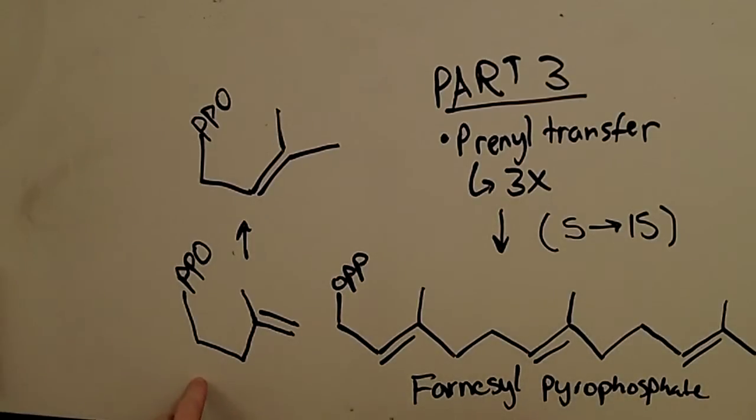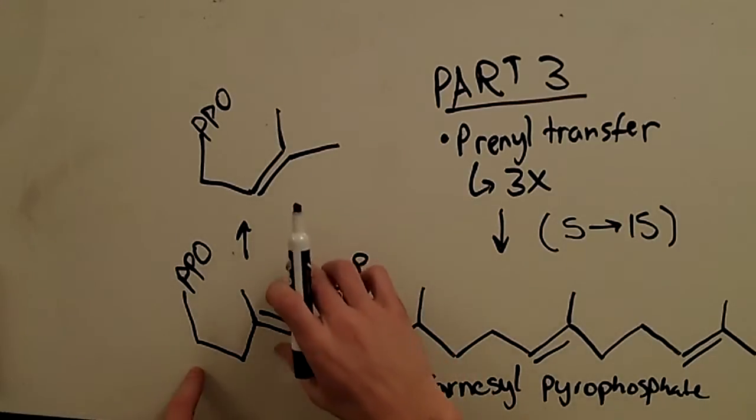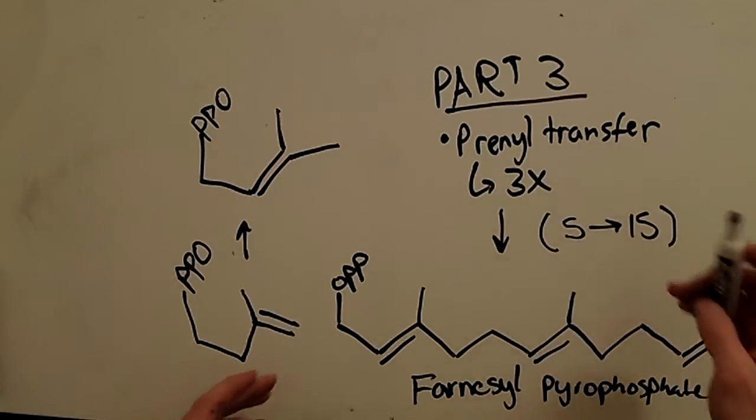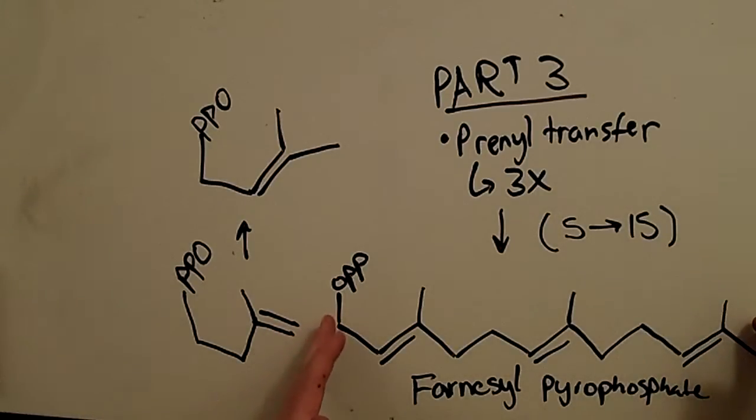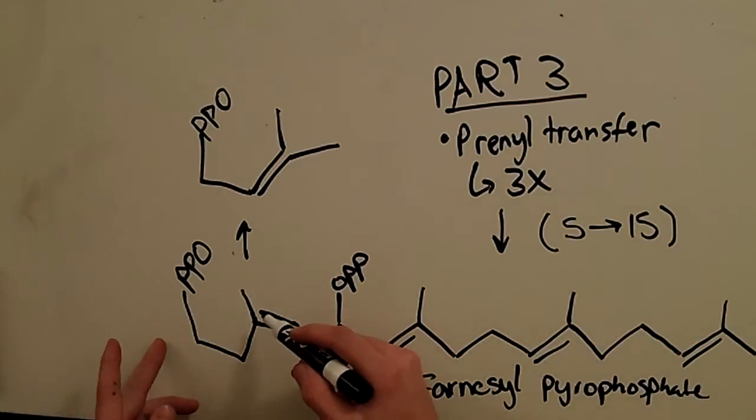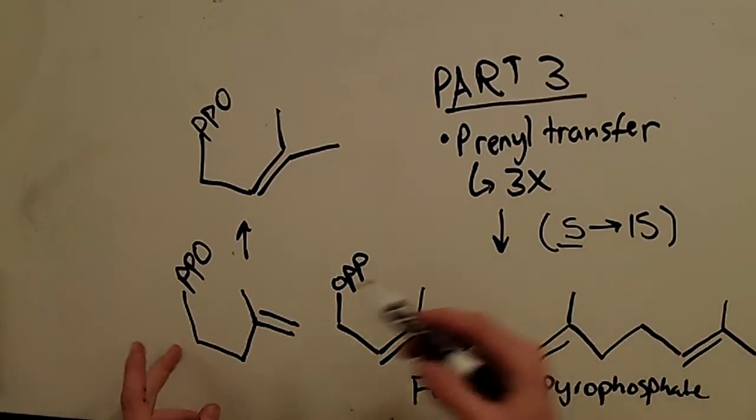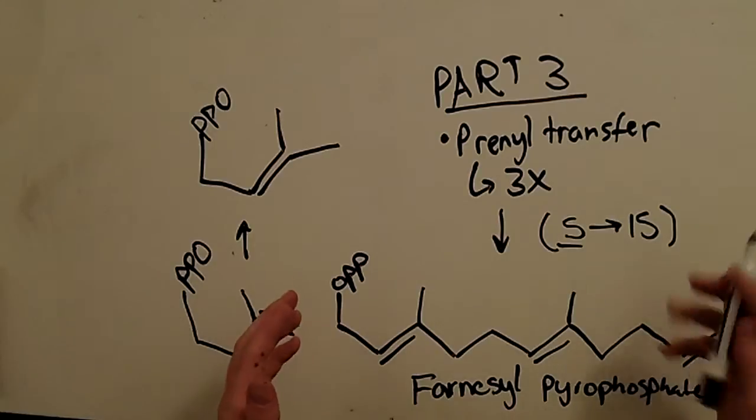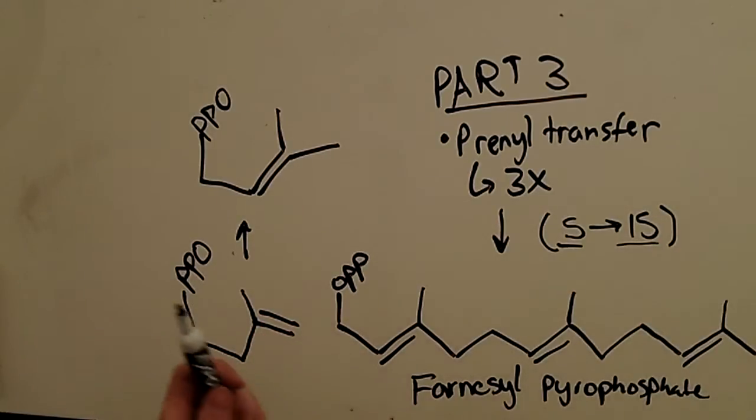But we actually have this compound within the cytosol. So these two compounds are going to condense in what is called the prenyl transfer, and that's going to happen three times, and it's going to yield farnesyl pyrophosphate. Five carbons in the dimethylallyl and isopentenyl pyrophosphate, and finally we have farnesyl pyrophosphate, which is 15 carbons. So we're well on our way to the synthesis.